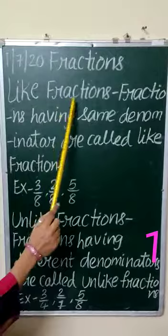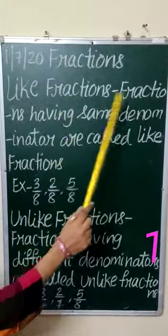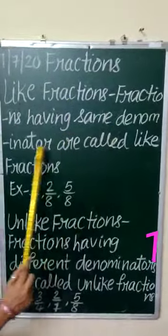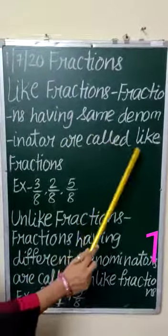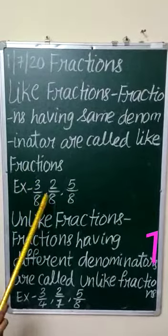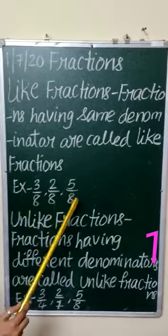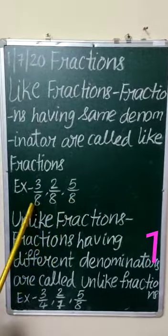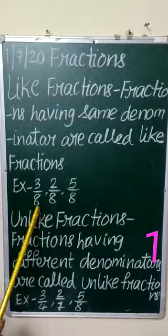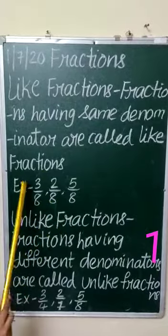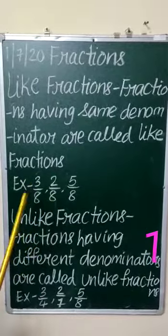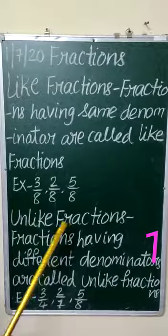Like fractions: fractions having the same denominator are called like fractions. For example, 3 by 8, 2 by 8, 5 by 8 — here the denominator is the same, so these are like fractions.